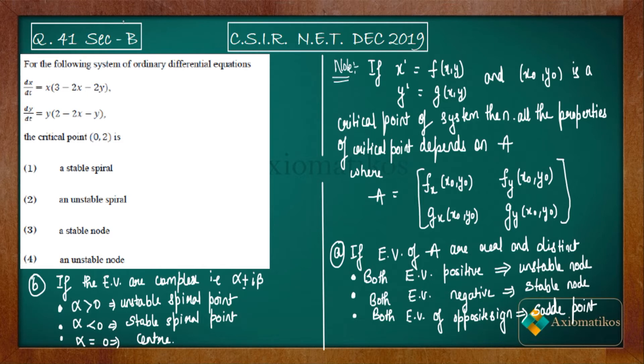This is your system that was given in the problem, and this is your critical point. Now the property of the critical point depends on this matrix. So your critical point will be stable spiral, unstable spiral, stable node, or unstable node - that all depends upon this matrix.